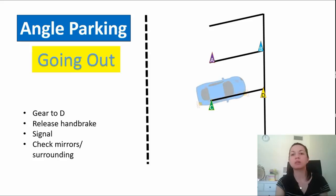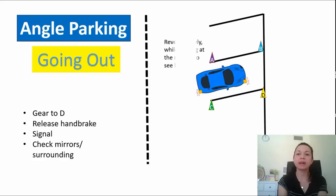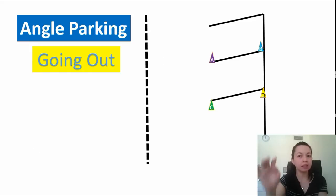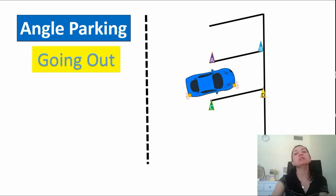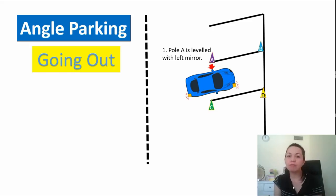Reverse your car slowly while looking at the mirrors to see behind. This is really, really easy. If pole A is already leveled with your left mirror, start turning your wheel full to the right.